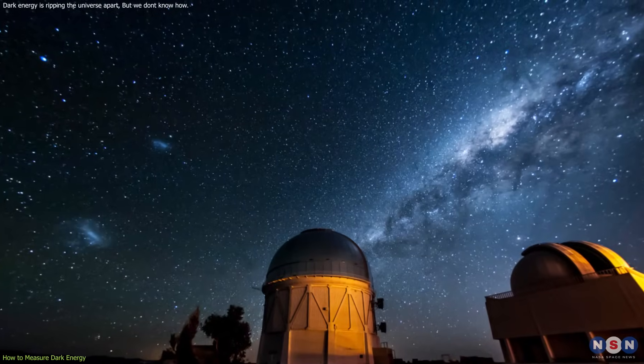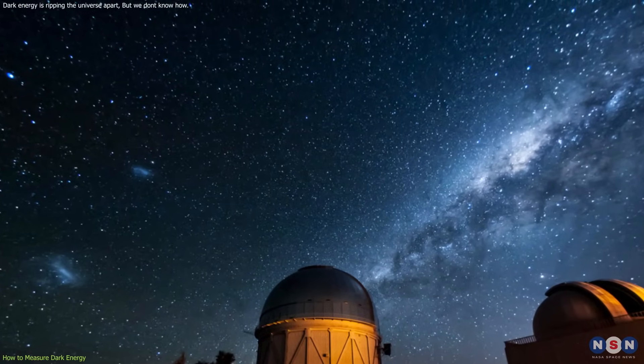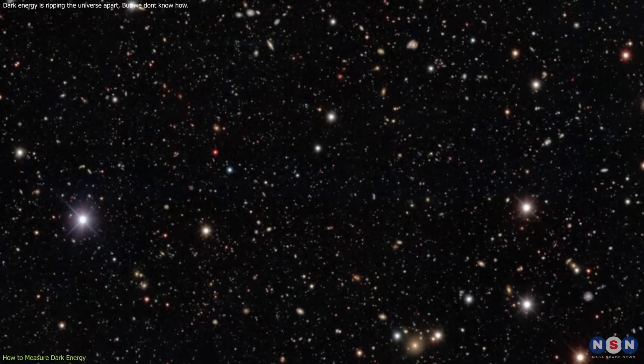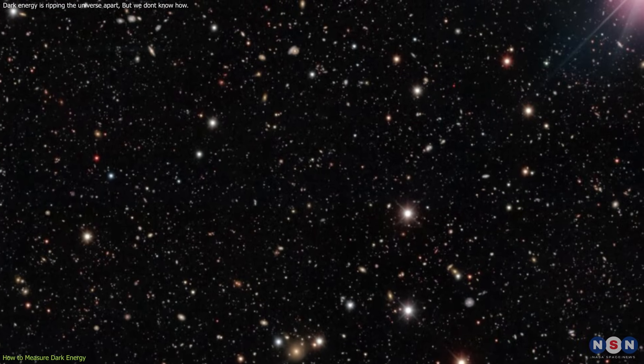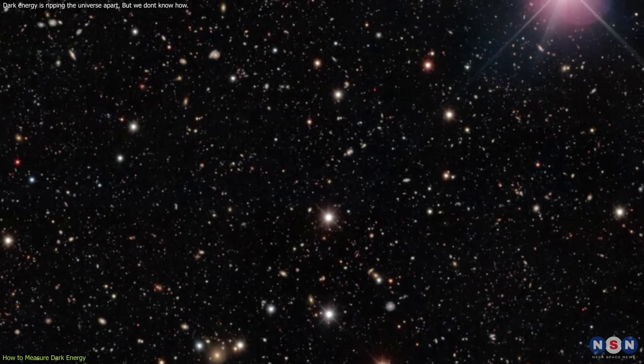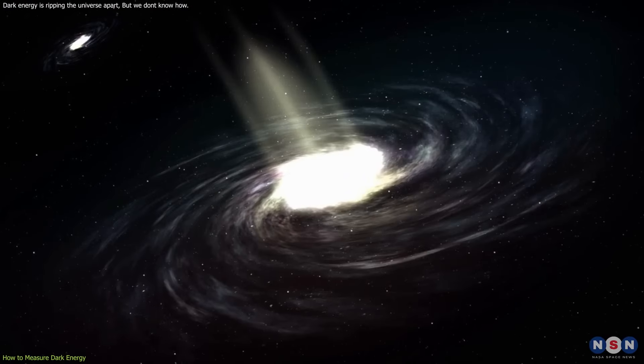It started in 2013 and ended in 2019, covering 5,000 square degrees of the southern sky and collecting data on about 691 million astronomical objects, such as galaxies, stars, and supernovae.